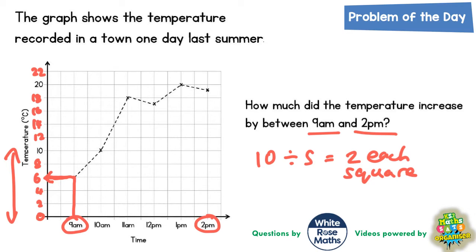So from 9am, the temperature up to the line graph and then read across was 6 degrees. I'll write that underneath: 6 degrees C.